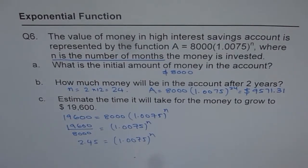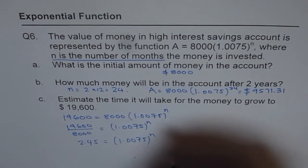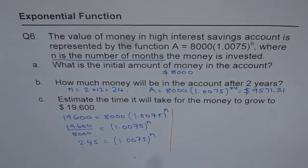So, we have 19,600 divided by 8,000 equals 2.45. So, we have 2.45 equals 1.0075 to the power of N. Now how will you calculate N? One way is to estimate, just try it out.